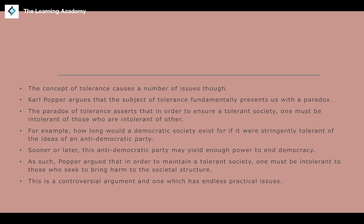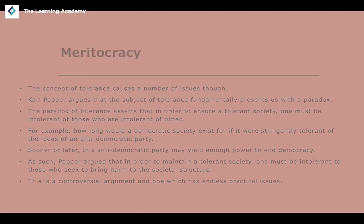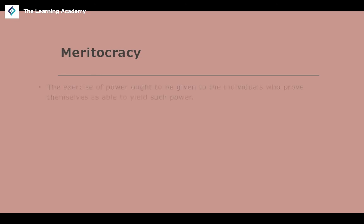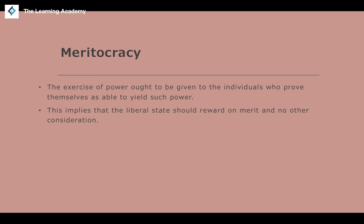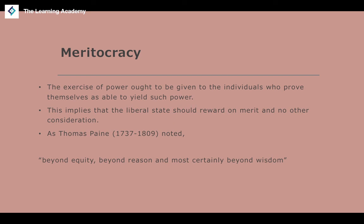This is of course a controversial argument with endless practical issues when applying the paradox of tolerance. The next point is meritocracy: the exercise of power must be given to those who prove themselves able to yield such power. The liberal state should reward on merit and no other consideration. Thomas Paine noted that the concept of aristocracy has no place in the liberal state.